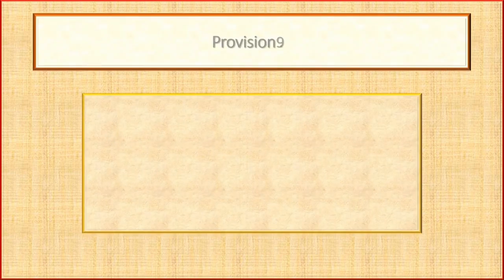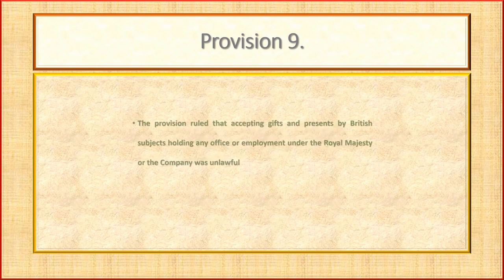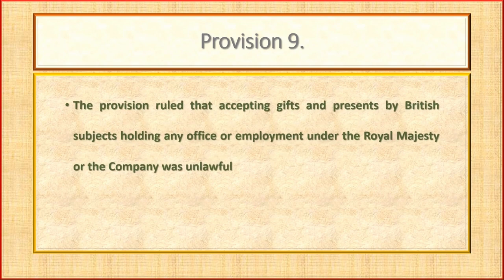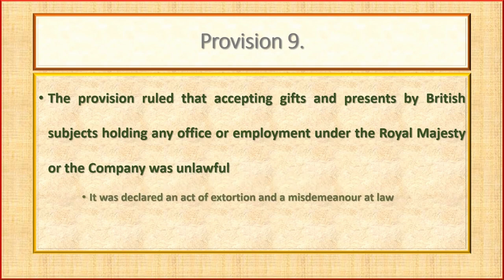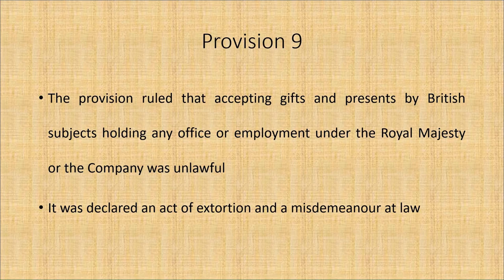In Provision 9, the rules laid down that accepting gifts and presents by British subjects holding any office or employment under the royal majesty or the company was unlawful. It was declared an act of extortion and a misdemeanor at law.